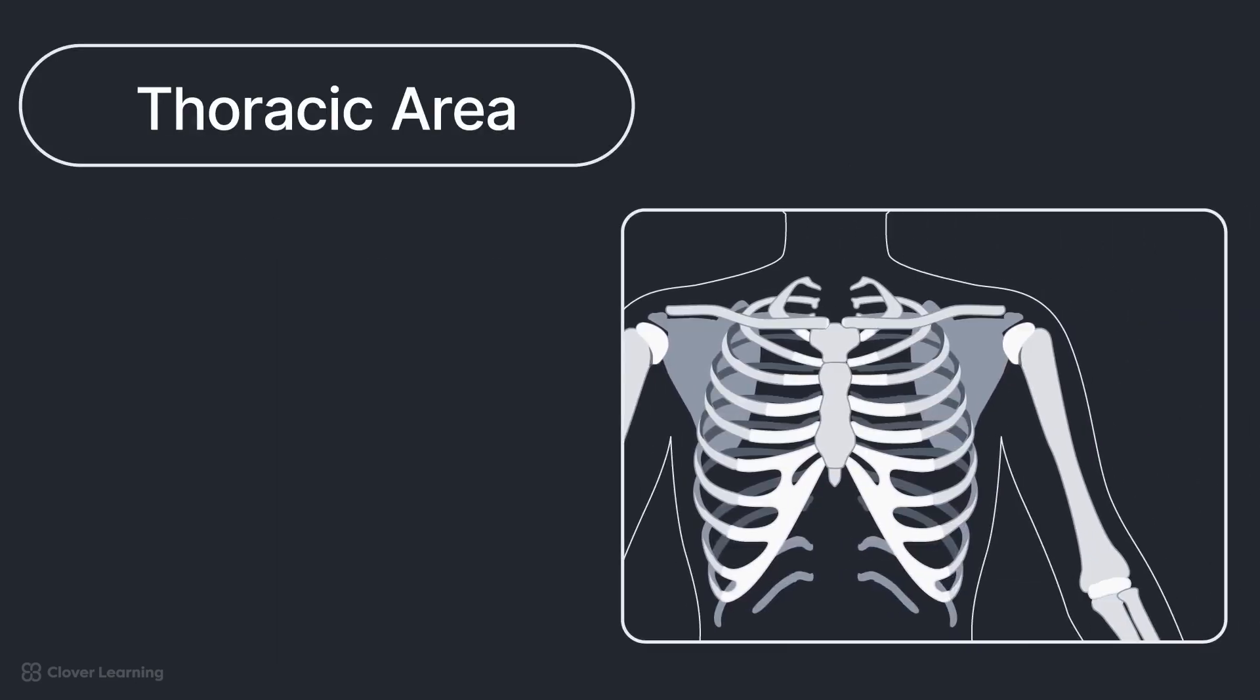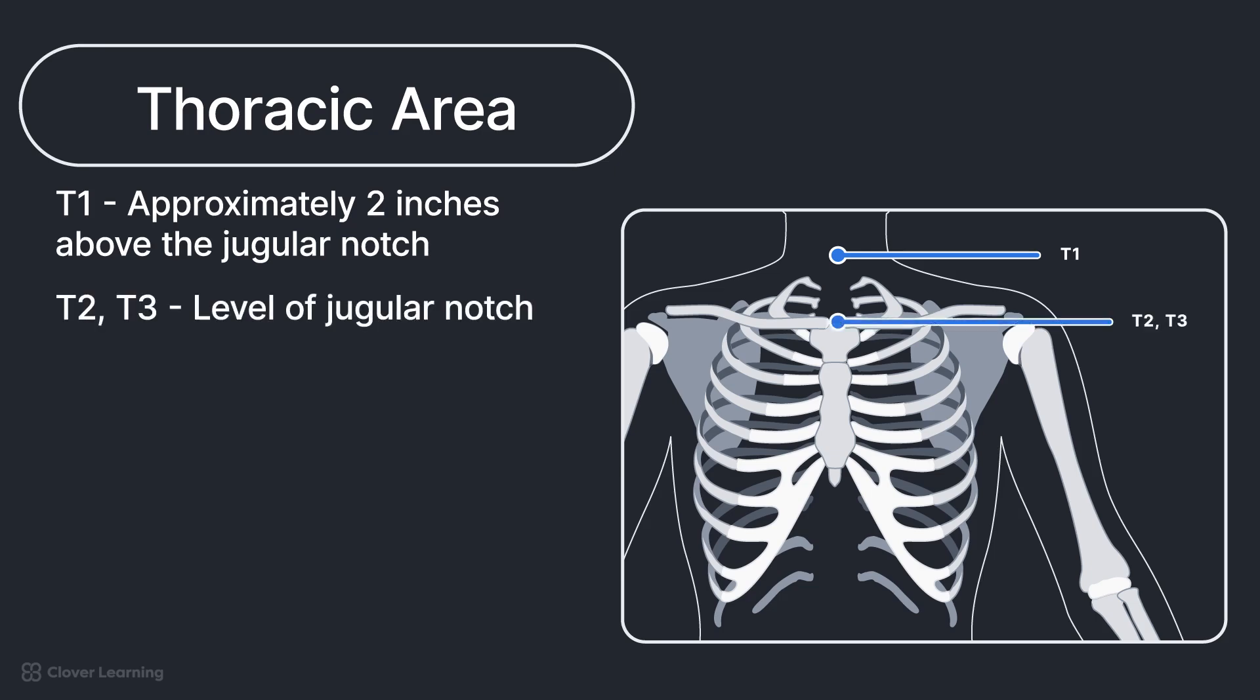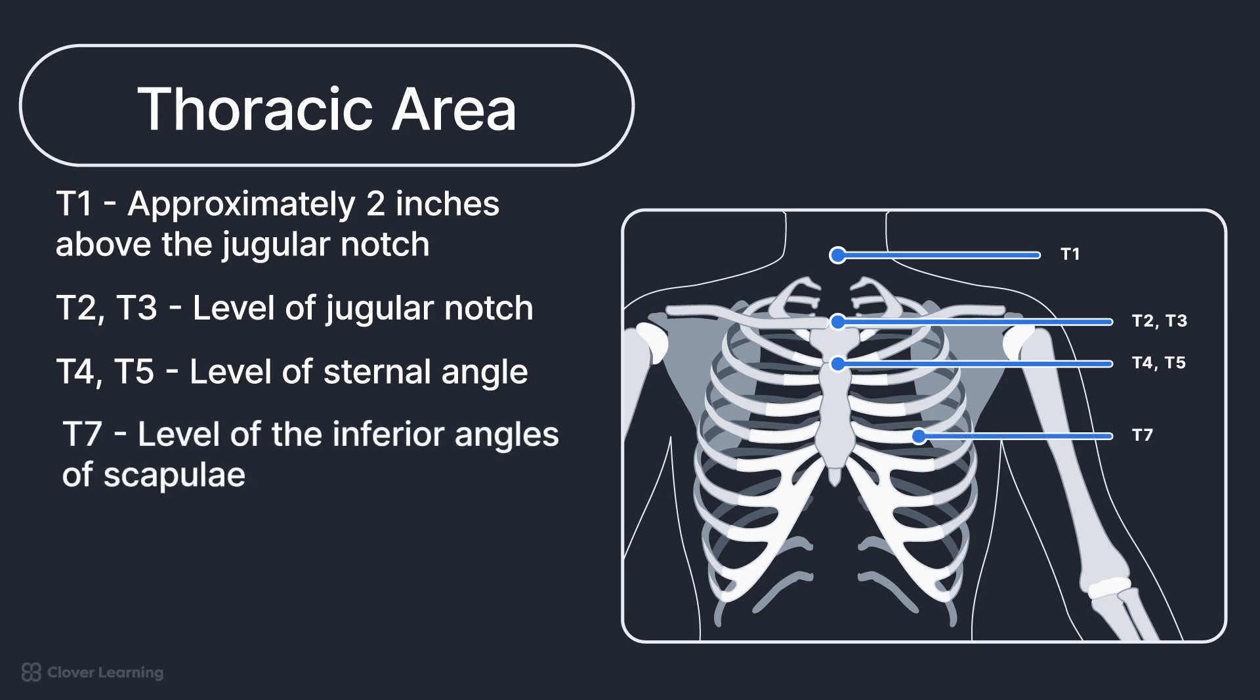Thoracic body structures and corresponding external landmarks include T1, approximately 2 inches above the jugular notch. T2 and T3, level of the jugular notch. T4 and T5, level of sternal angle. T7, level of inferior angles of scapulae. T9 and T10, level of xiphoid process, or xiphoid tip.